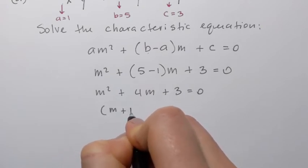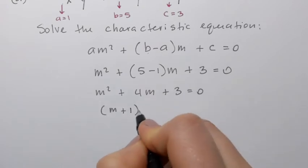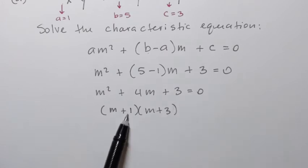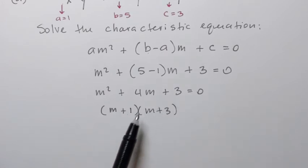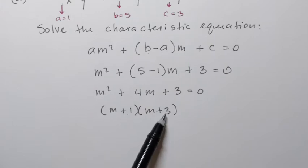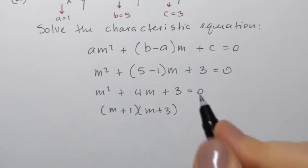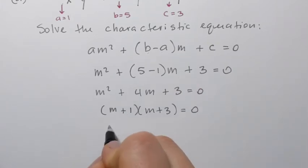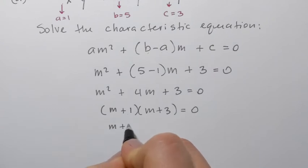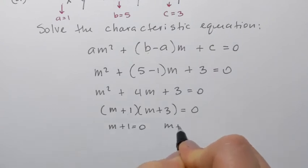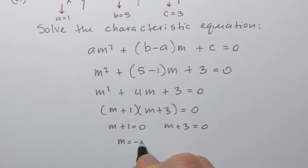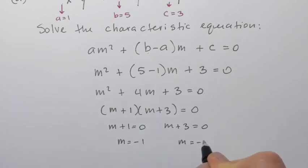Factoring gives us (m plus 1)(m plus 3) equals 0. Let's check: 1 times 3 gives 3, and 1 plus 3 gives positive 4 — perfect. Setting each factor to zero: m plus 1 equals 0 gives m equals negative 1, and m plus 3 equals 0 gives m equals negative 3.